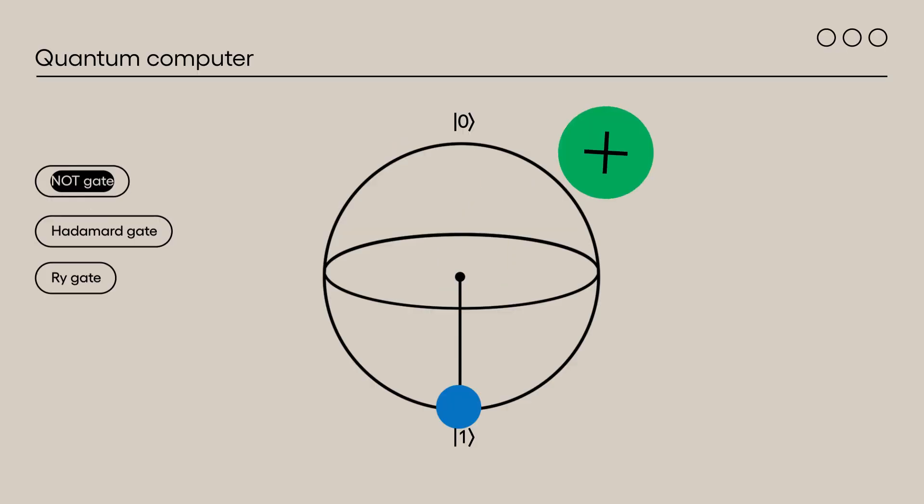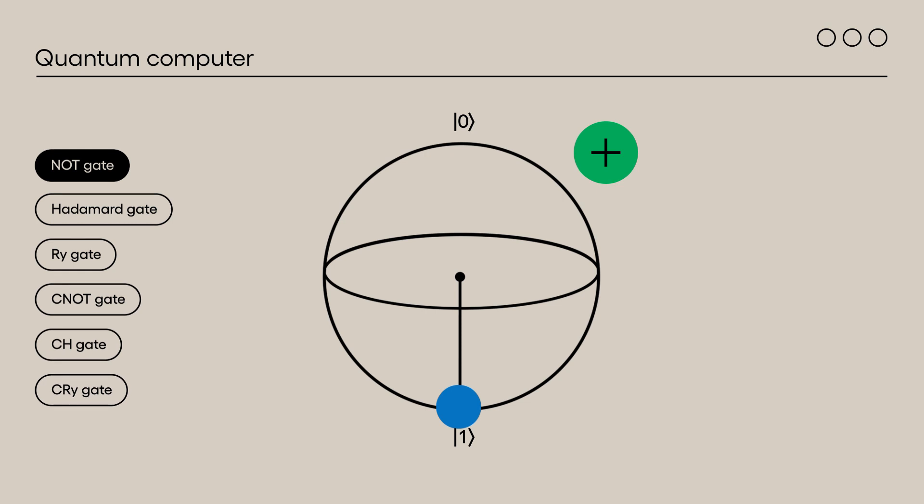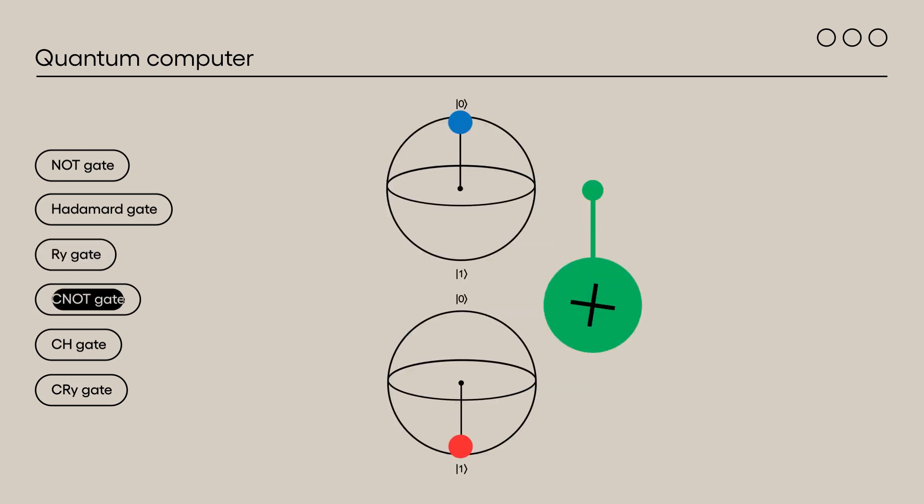The NOT gate transforms the state of qubits into their opposite state. The Hadamard gate places a qubit in a superposition of 0 and 1 states. The RY gate rotates the state of a qubit around the Y axis with an arbitrary angle. Finally, here is the controlled version of each previous gate.